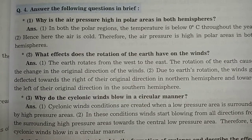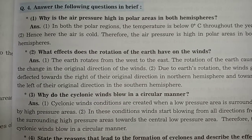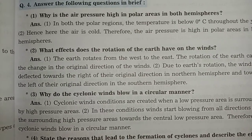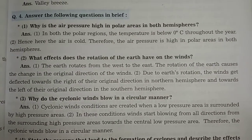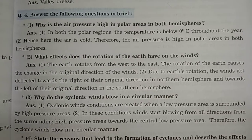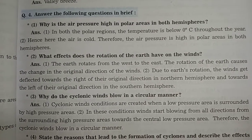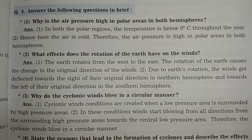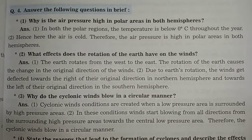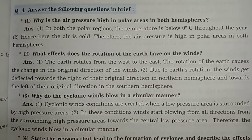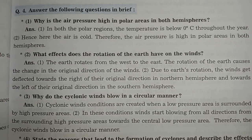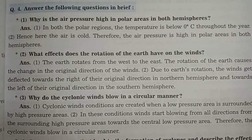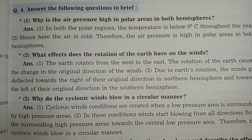Why do cyclonic winds blow in a circular manner? Cyclonic wind conditions are created when a low pressure area is surrounded by a high pressure area. In this condition, winds start blowing from all directions from the surrounding high pressure area toward the central low pressure area. Therefore, cyclonic winds blow in a circular manner.